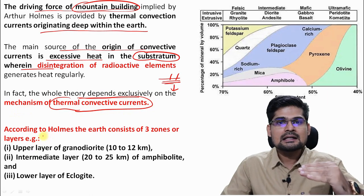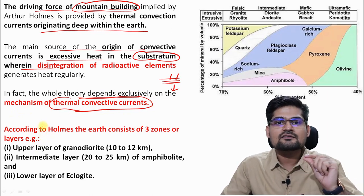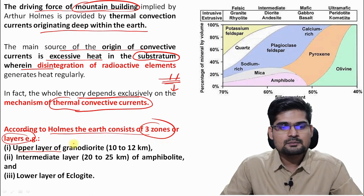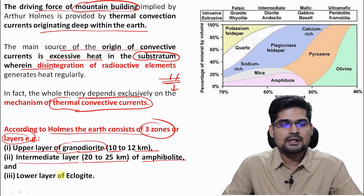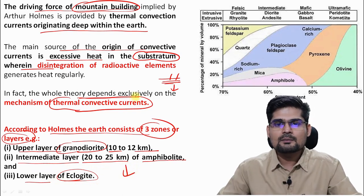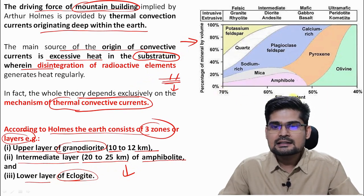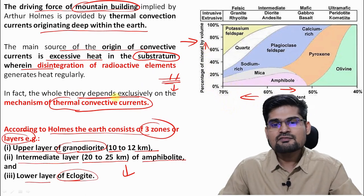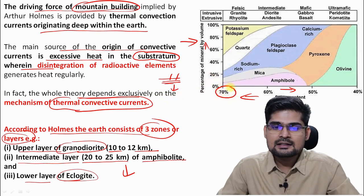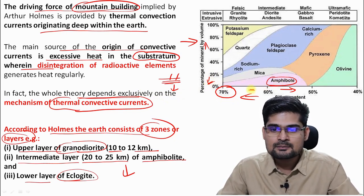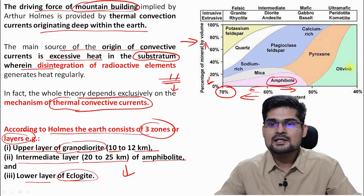Holmes discussed three different layers in the earth where different convective zones are present. According to Holmes, the earth consists of three zones: the upper layer is made of granodurite up to 10 to 12 kilometers; the intermediate layer is 20 to 25 kilometers made of amphibolite; and the lower layer of eclogite. Looking at the geological graph, it shows silica content against percentage of mineral by volume — amphiboles are minimum in terms of availability but maximum in silica content, while olivine and pyroxene have lesser silica content but greater presence.